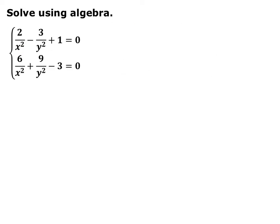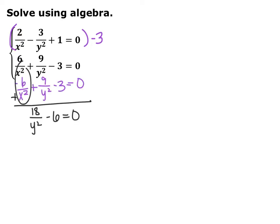You can also use elimination like we do with linear equations. For instance, if I multiply the top equation by negative 3, I can eliminate the term with x squared. Multiplying gives negative 6x squared plus 9y squared minus 3 equals 0. Adding that to the second equation gives 18y squared minus 6 equals 0. Go ahead and pause the video, solve for y squared, then plug that into one of the equations to solve for x.